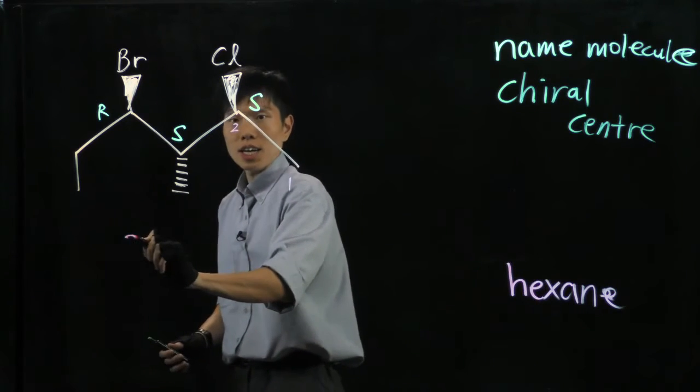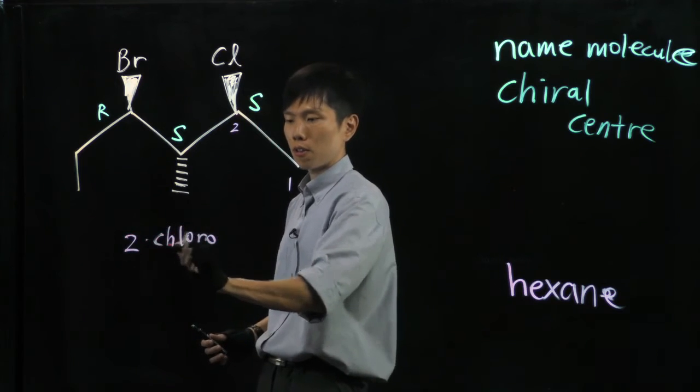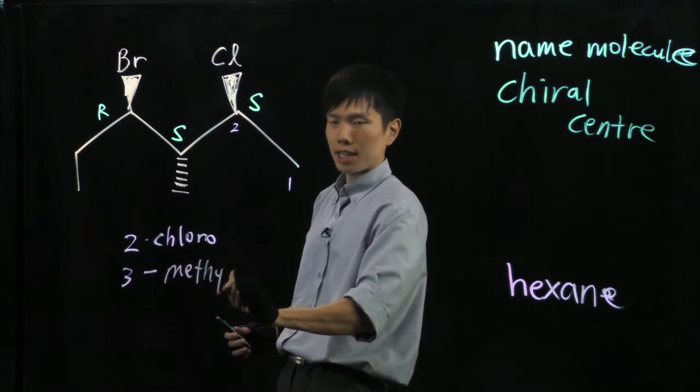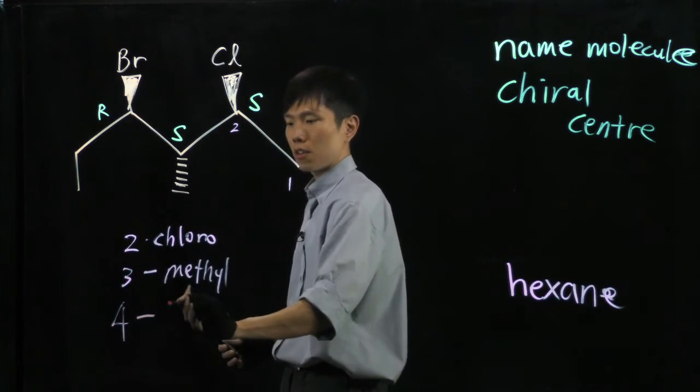This becomes a 2-chloro, and then we have a 3-methyl, and next a 4-bromo.